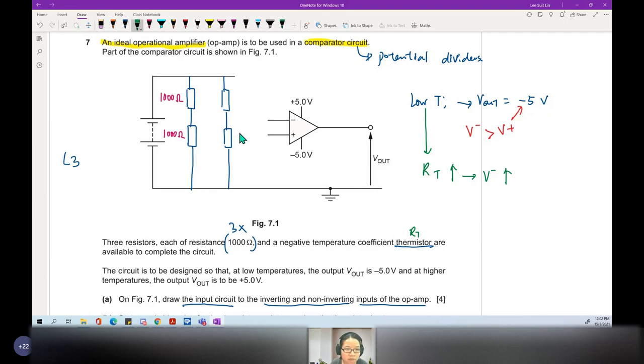So then if let's say I let here to here be my V minus, then I can connect this this way. And then this will be my thermistor. There are other options. Maybe you can think of what they are, but I'm just going to draw the most obvious one. And then this is my 1000 ohm.